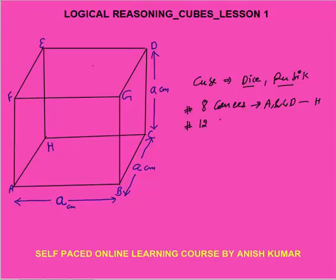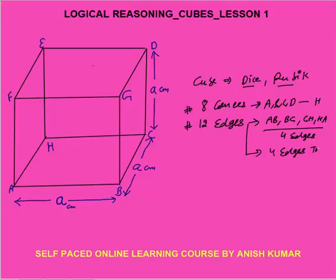How many edges do we have? We have 12 edges in the cube. Edges means the straight lines: AB is an edge, BC is also an edge, CH is also an edge, and HA is also an edge. So there are 4 edges on the floor, same way 4 edges on the top surface (FG, GD, DE, EF), and 4 pillar edges (AF, BG, CD, HE). Total we have 12 edges.